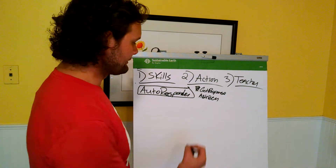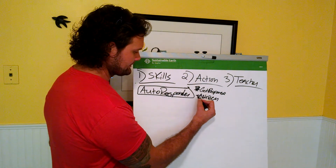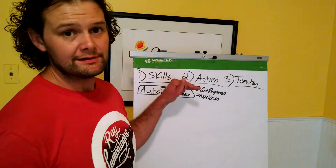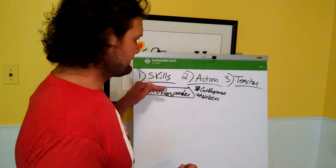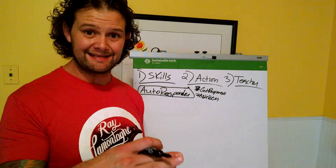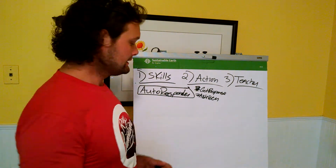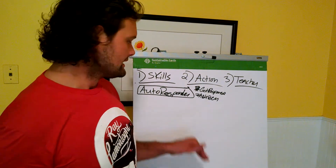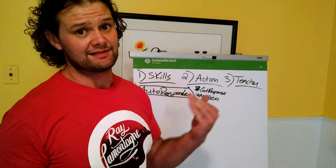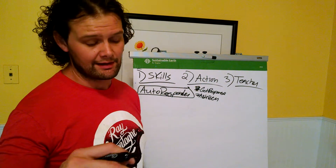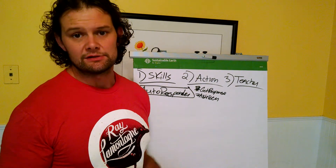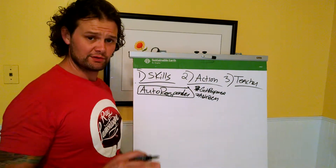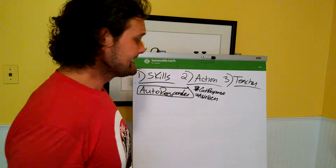GetResponse or Aweber are two pretty basic, easy-to-use autoresponders that hold an email database. So what you do, once you have an email list, once you have leads in your list, you can write one email and send something out to thousands of people at a time. So the autoresponder really saves us a lot of time versus writing one email and copying and pasting it to hundreds or even thousands of people. The autoresponder is one of the best tools that you'll ever use online.